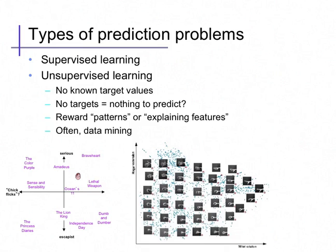On the left is one such unsupervised framework, this time applied to the Netflix data again, where now the data have been used to understand the notion of similarity between movies. We can use the ratings to organize and group them by similarity, summarize them, or even improve some kind of prediction problem.